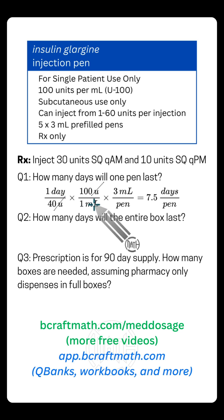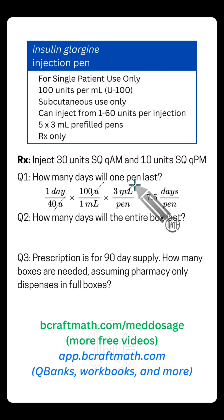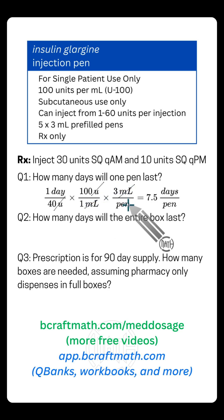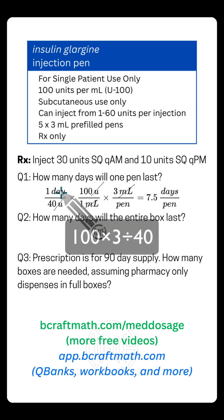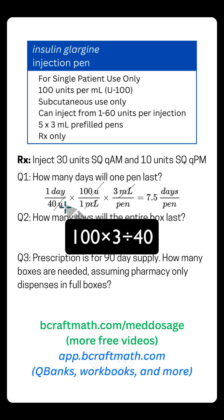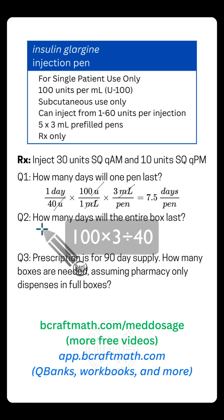Now we need to get rid of milliliters. We know there are three milliliters per pen, so we put three milliliters at the top to cancel out the milliliters — that's three milliliters per pen. We have now met our goal because we have days per pen, which is what the question is asking. Multiply the top numbers and divide by the bottom numbers: the top gives you 300, divided by 40 — the same calculation as the fast way.